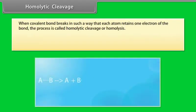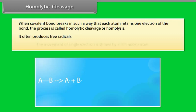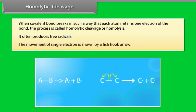Homolytic cleavage: when a covalent bond breaks in such a way that each atom retains one electron of the bond, the process is called homolytic cleavage or homolysis. It often produces free radicals. The movement of a single electron is shown by a fishhook arrow.